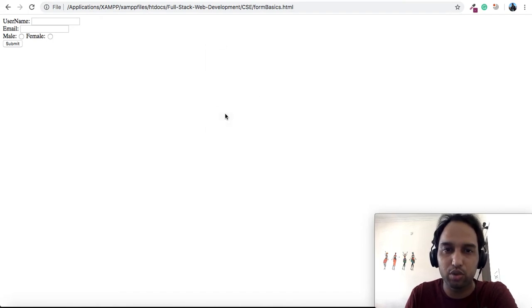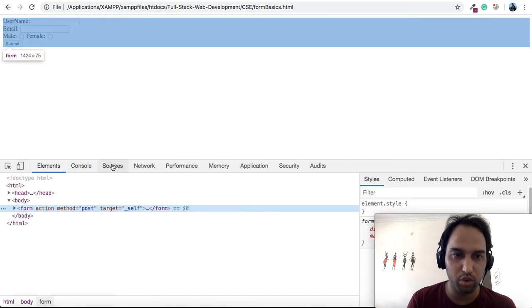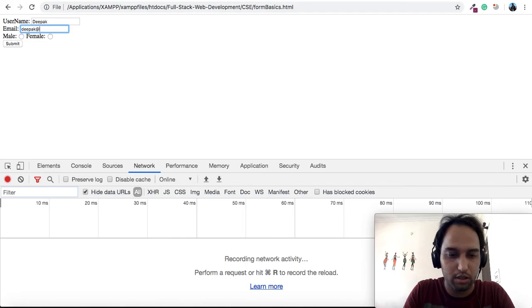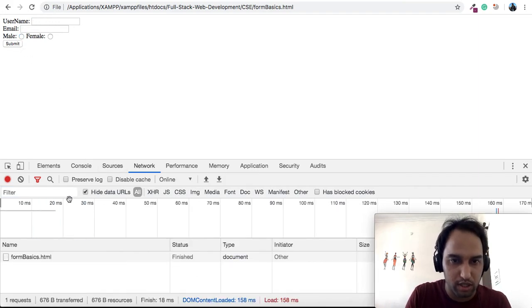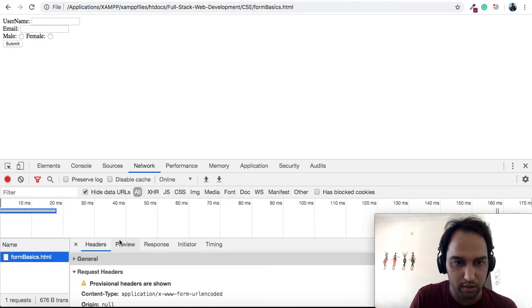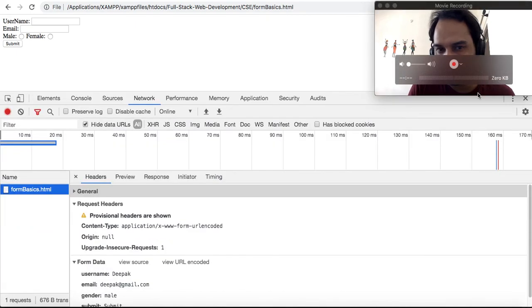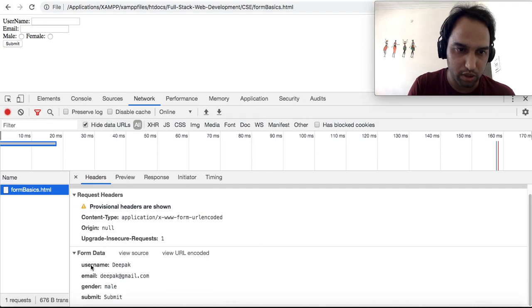Let's come back, refresh it and type. Click on it and you can see the data is submitted but you can't see the data in the URL. How can you see the data? Go to inspect in Google Chrome, go to the Network, and again try to submit the data. Here you will be able to see the data. Submit, and you can see here is form basics.